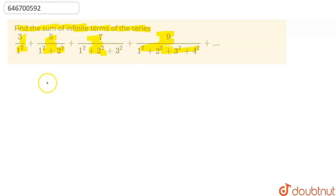To solve this question, first of all let's write the general term of this series. So the general term of the given expression is Tn equals 2n plus 1 upon 1 square plus 2 square plus 3 square plus up to n square.